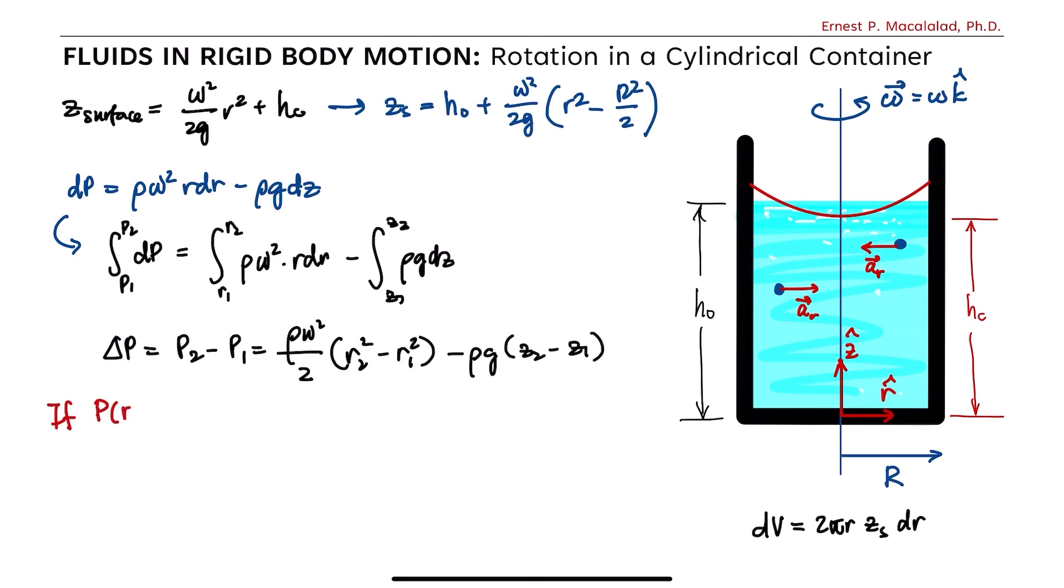If at the origin p is equal to p0, therefore the pressure at any point r z is equal to p0 plus rho omega squared over 2 r squared minus rho g z.